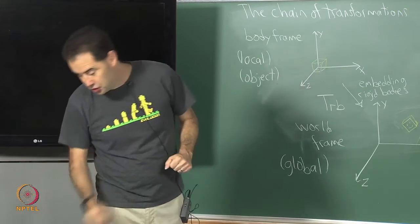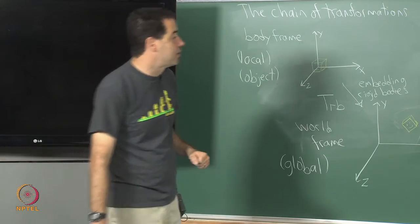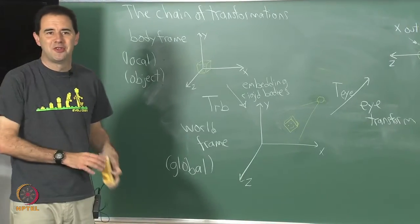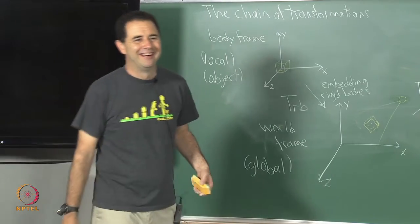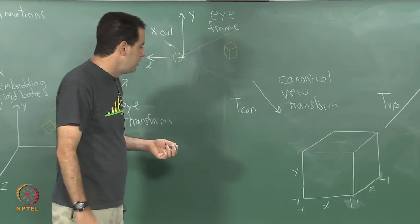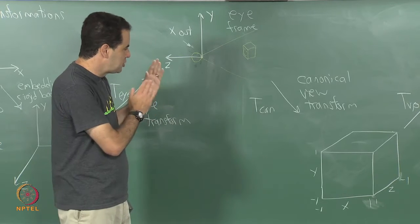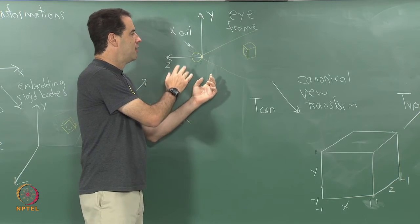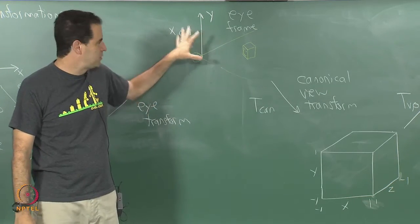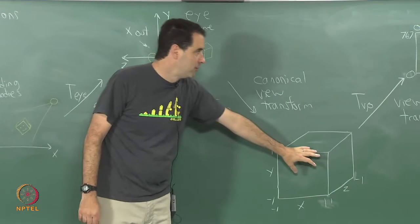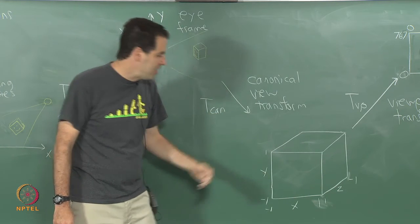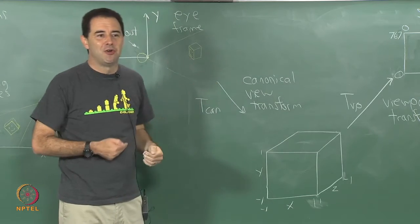I am going to write out the chain of transformations algebraically. So we start here — I have brought all of the model in the world into the eye's perspective, that is where you are at in the eye frame. When you are down in the canonical form you have figured out what would go on the screen, and you still have a z-depth to all these things that are going to go on the screen.